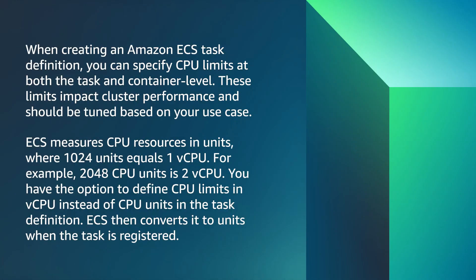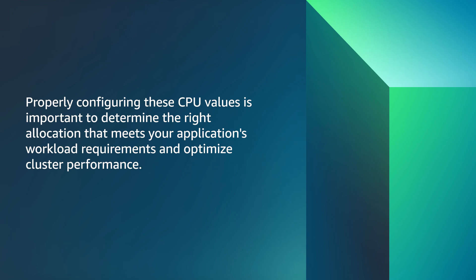When creating an Amazon ECS task definition, you can specify CPU limits at both the task and container level. These limits impact cluster performance and should be tuned based on your use case. ECS measures CPU resources in units where 1024 units equals 1 vCPU. For example, 2048 CPU units is 2 vCPU. You have the option to define CPU limits in vCPU instead of CPU units in the task definition. ECS then converts it into units when the task is registered. Properly configuring these CPU values is important to determine the right allocation that meets your application's workload requirements and optimize cluster performance.